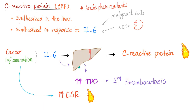C-reactive protein — it's a protein. The active things in your body are always proteins. It's synthesized in the liver — shocker, isn't it? And it's synthesized in response to interleukin-6. So when you have cancer or inflammation, they secrete interleukin-6. Interleukin-6 goes to the liver to stimulate the liver to secrete C-reactive protein in response to inflammation. That's why we call C-reactive protein an acute phase reactant — something that happens when there is an acute process such as inflammation going on.